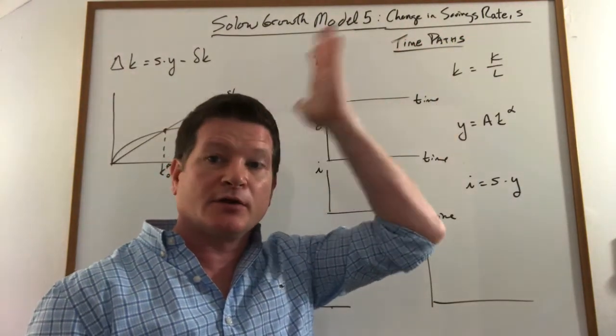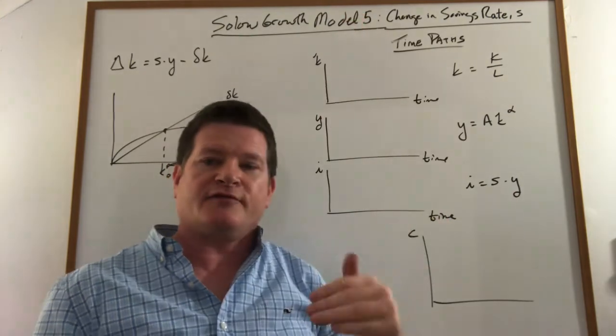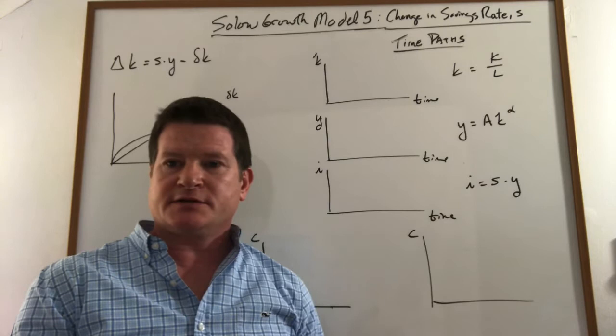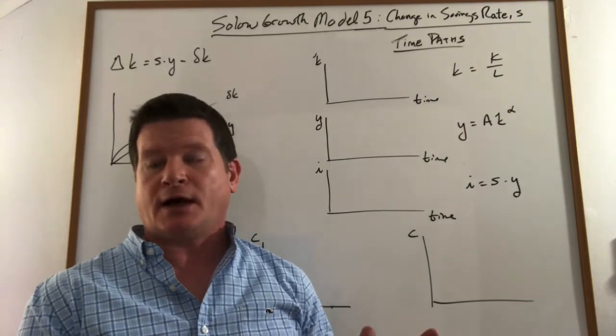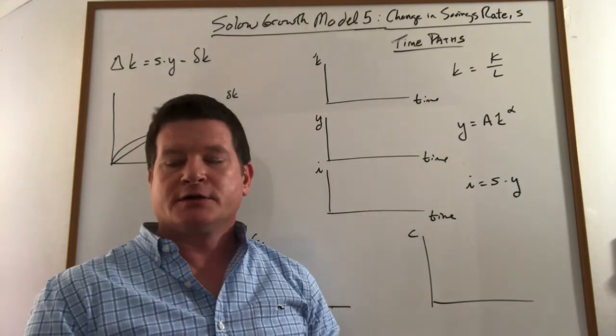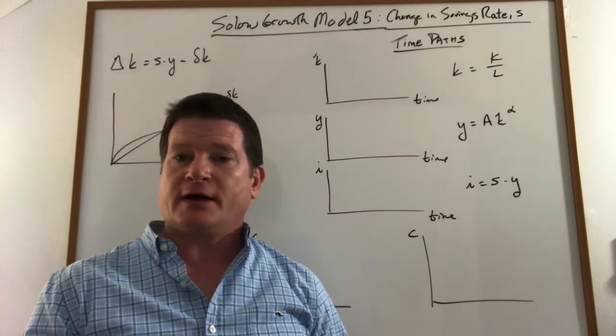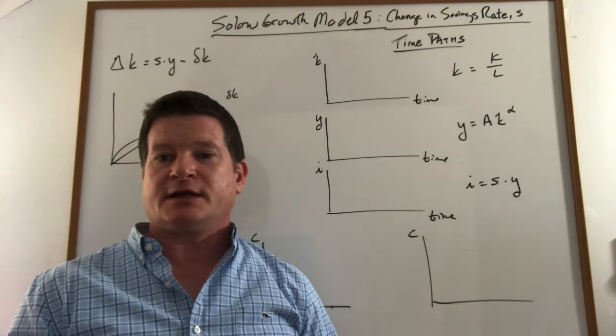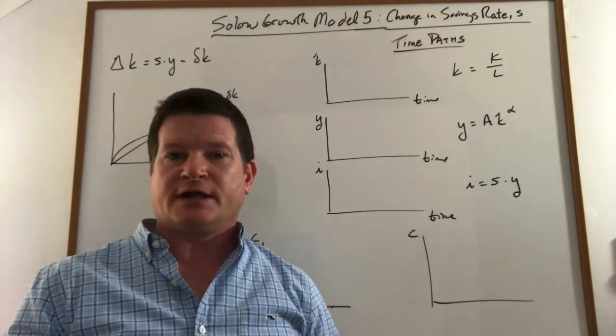Now this becomes a little complicated because we have to know if we are currently at the maximum consumption steady state or not and where we are. So if you don't know how to do that, go back and look at the video on how to find the maximum consumption steady state, otherwise called the golden rule steady state.